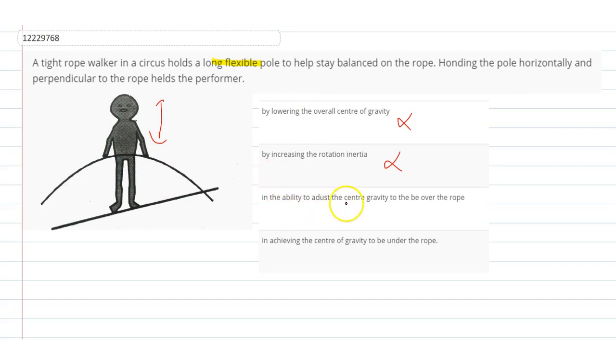This is the ability to adjust the centre of gravity to be over the rope. Okay? So, this is the option. Now, what is the centre of gravity? Now, this is the option because when it is going to tip over here...